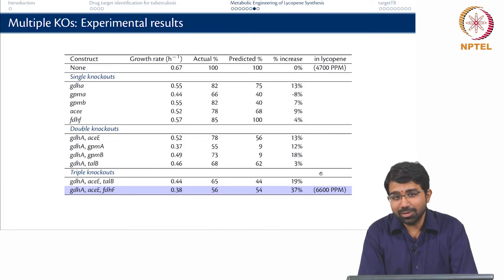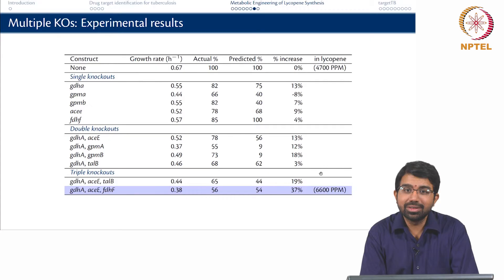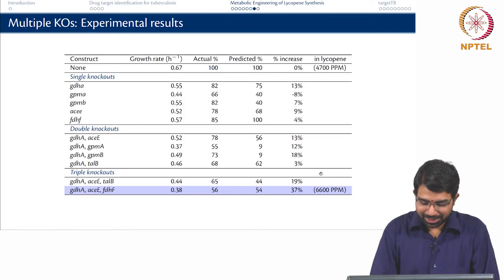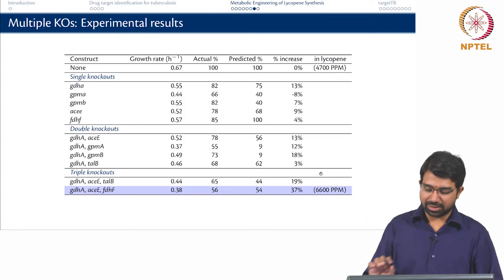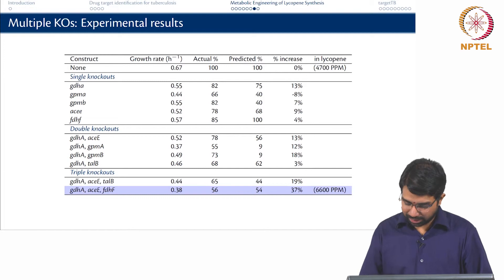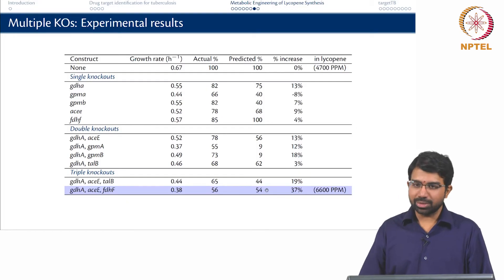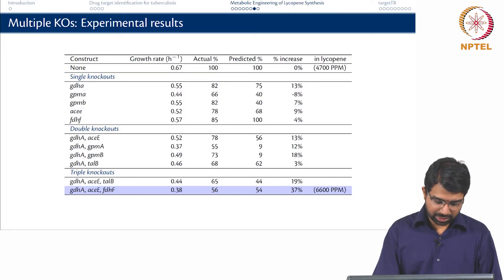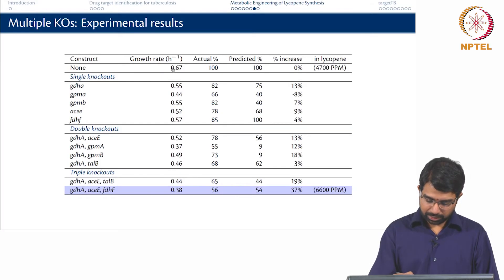This table is very interesting and summarizes the entire approach. It tells you that your predicted increase and actual increase may not match — they may even vary in direction — but you are very likely to hit a good strain by doing this modelling. The model is wrong but it is quite useful. There are about 5 single knockouts, 4 double knockouts, and a bunch of triple knockouts listed. The growth rate and predicted growth rate in percent are shown alongside the increase in lycopene production.